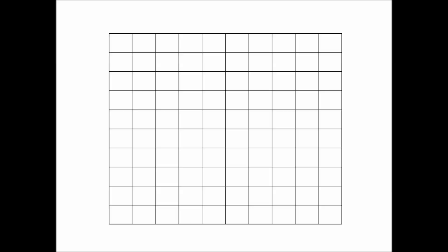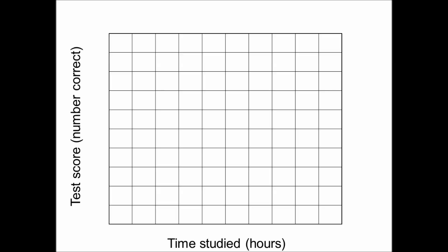Now that you have had a chance to try this, we're going to go through and graph all this data. In order to graph the data, the first thing we need to do is label our axes. In this case our independent variable, that is our x-axis, is going to be our time studied. Our dependent variable is going to be our test score — that is the number of questions correct.